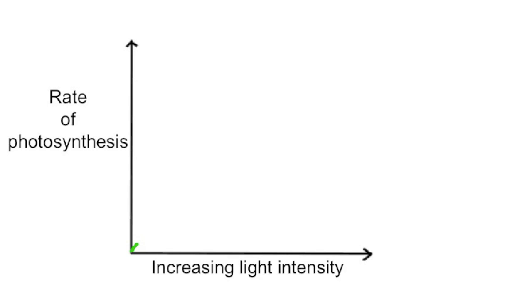As long as all other variables remain constant, then increasing light intensity increases the rate of photosynthesis, but up until a point, then you reach a plateau where you have the maximum rate of photosynthesis under those conditions.